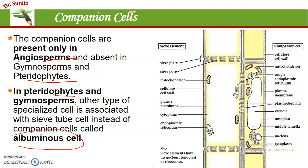This is the structure of the companion cells. These are the lateral pits with the help of which these are connected with the sieve tube cells. They have other prominent organelles like mitochondria and endoplasmic reticulum, and these have a prominent nucleus, full cytoplasm, and a central large vacuole.